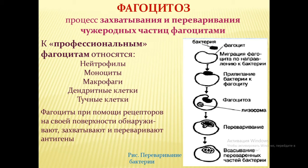Процесс фагоцитоза схематично изображён на рисунке. Когда появляется бактерия, соответствующий фагоцит мигрирует к месту внедрения бактерии, затем прикрепляет её на свою поверхность — происходит прилипание бактерии к поверхности фагоцита. У фагоцита имеются органеллы — лизосомы. Фагоцит поглощает бактерию внутрь клетки, а лизосома начинает разрушать и переваривать её.